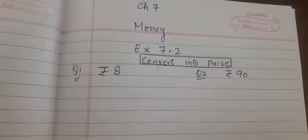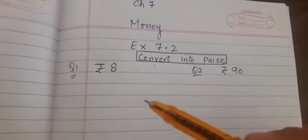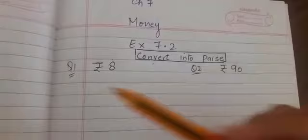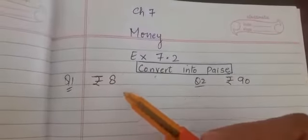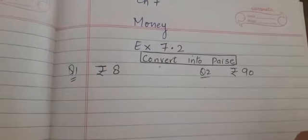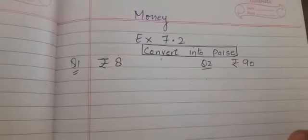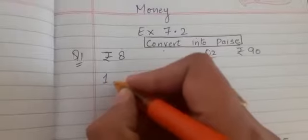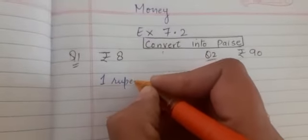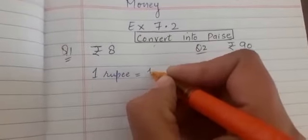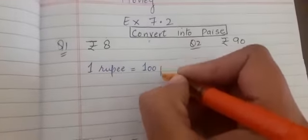Children, you need to remember while converting rupees into paise we multiply the given number by 100. Why? Because in 1 rupee there are 100 paise, that means 1 rupee is equal to 100 paise.